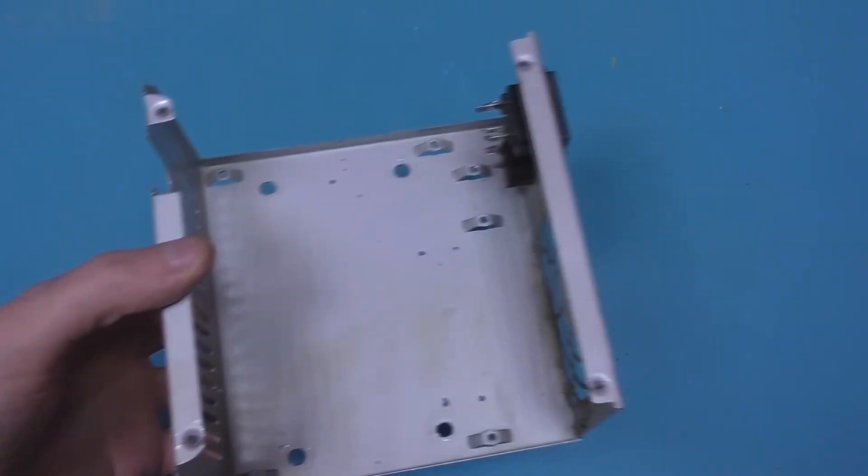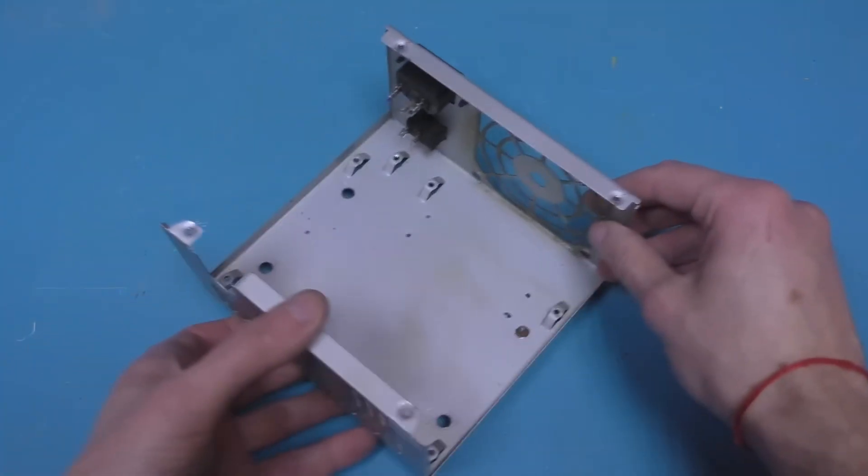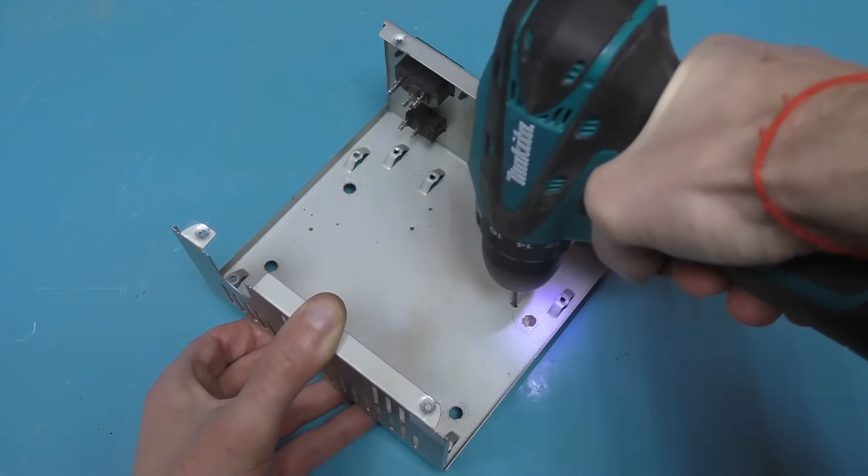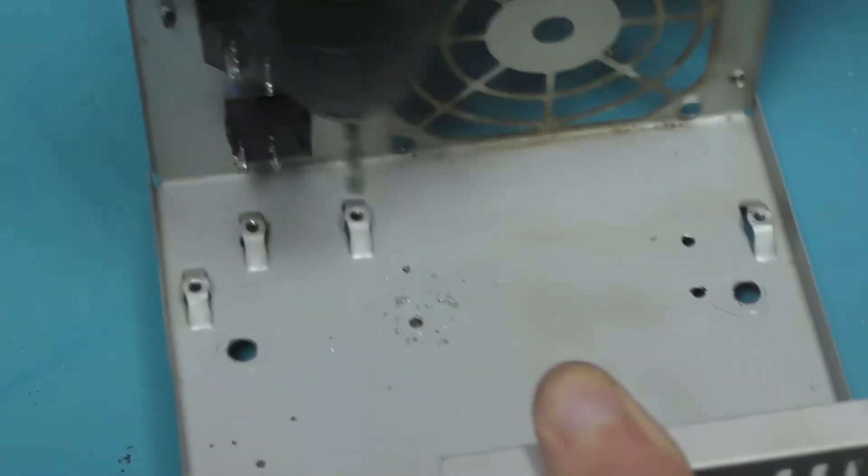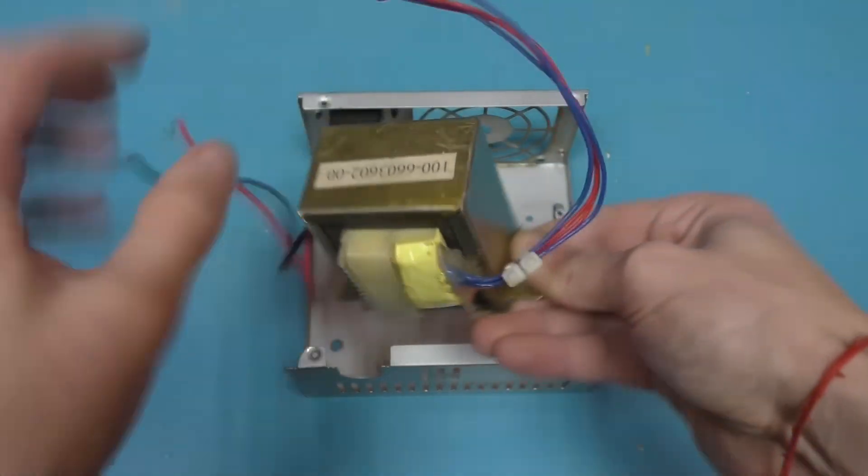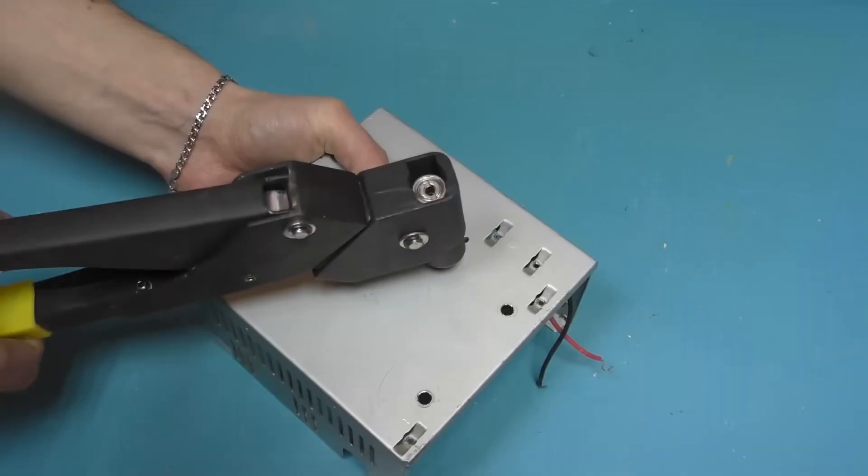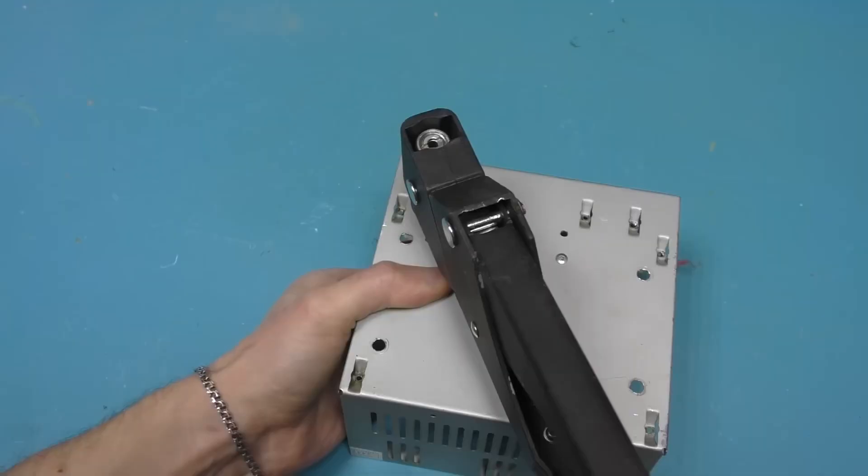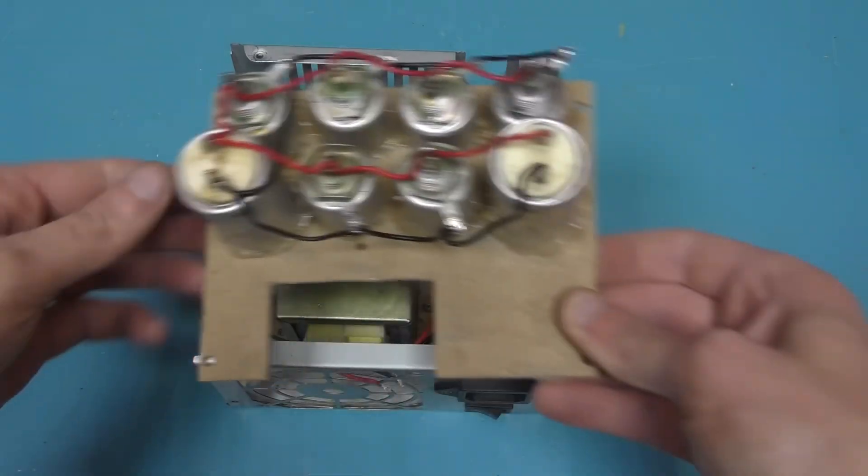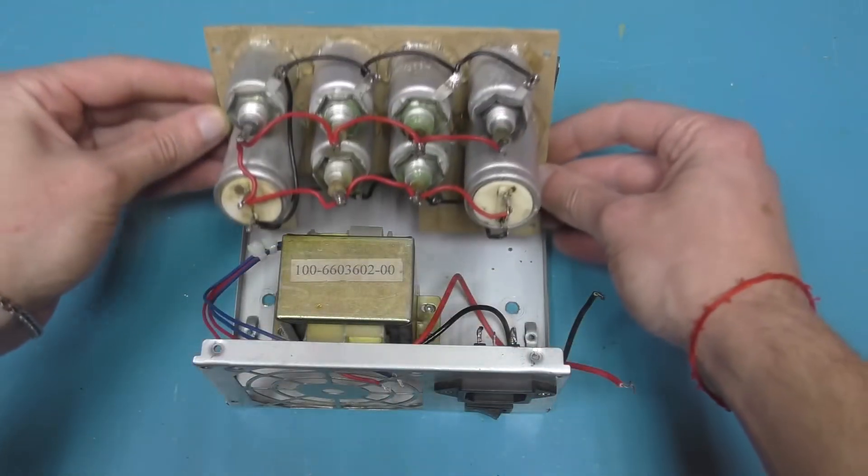Next, I take the case from a computer power supply and drill 4 holes in it, as shown on the screen. After making the holes, you need to attach the 24V transformer to the case. I did this using rivets. Now we attach the fiberboard with the capacitors.